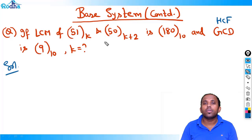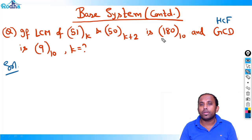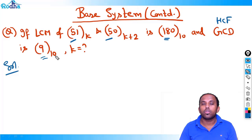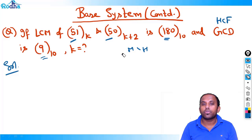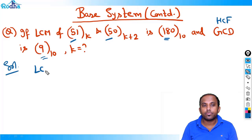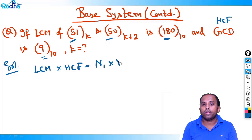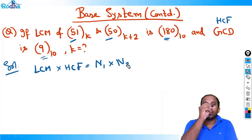It's a simple question. Because when two numbers are given and LCM and HCF are given, the relation is: LCM × HCF = product of two numbers, that is N1 × N2.